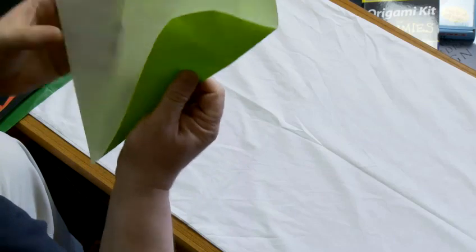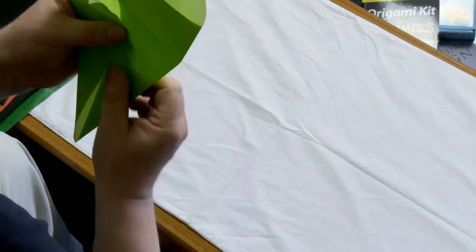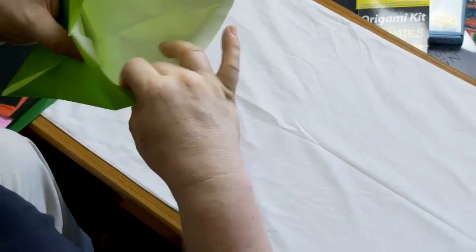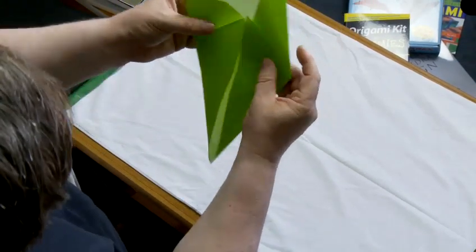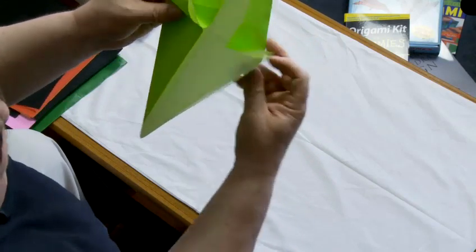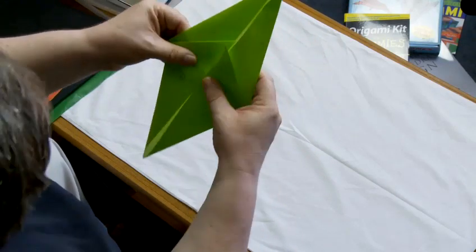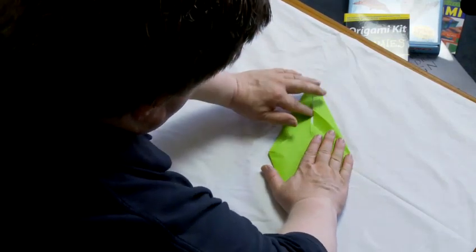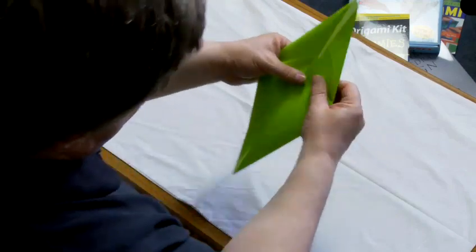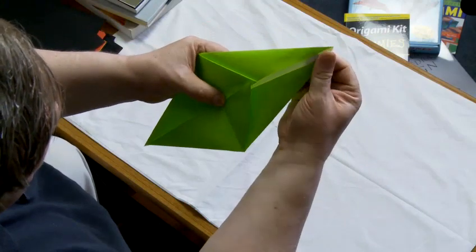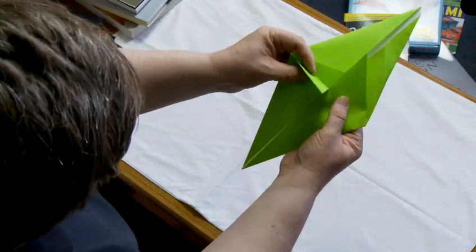When we do that, we can refold these raw edges in. Refold the top raw edges in. And we have a flap that sort of automatically makes itself in the middle. And don't worry too much for the purpose of this flower. It doesn't matter if you have little gaps like this. It makes it more organic looking. That's fine.